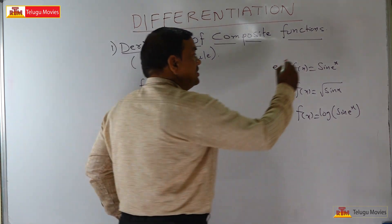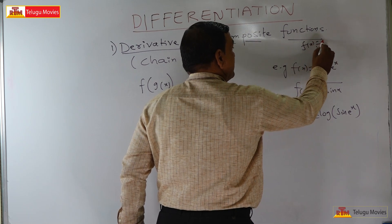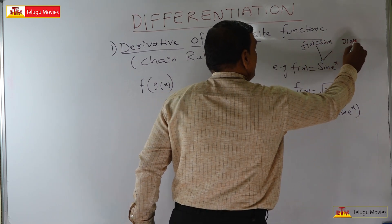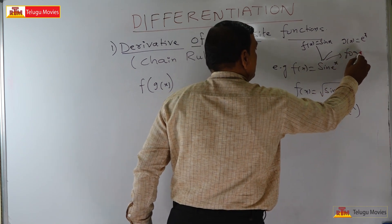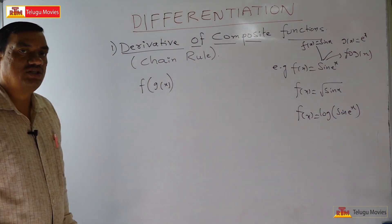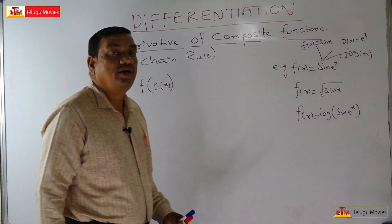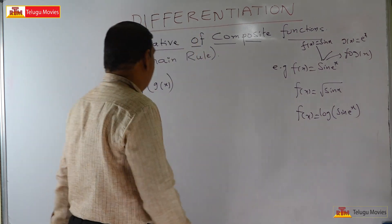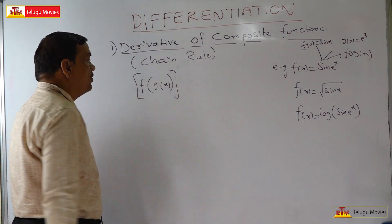This is a mixture of two functions: f of x is equal to sin x and g of x is equal to e power x. This is f circle g of x, that is sin of e power x. Now, how to find the derivative of these functions — the total derivative?